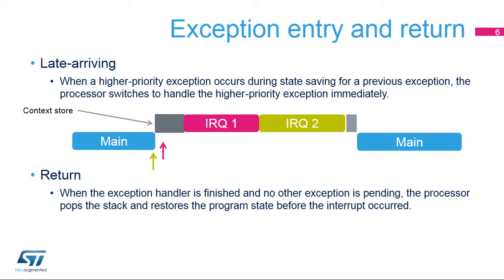When an interrupt arrives, the processor first saves the program context before executing the interrupt handler. If the processor is performing this context saving operation when an interrupt of higher priority arrives, the processor switches directly to handling the higher priority interrupt when it finishes saving the program context. When all exception handlers have been run and no other exception is pending, the processor restores the previous context from the stack and returns to normal application execution.